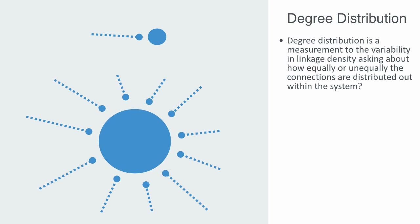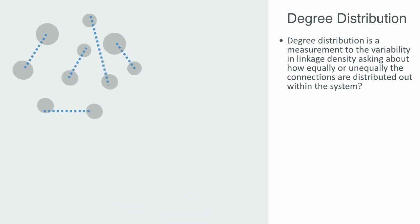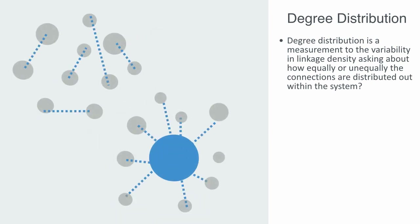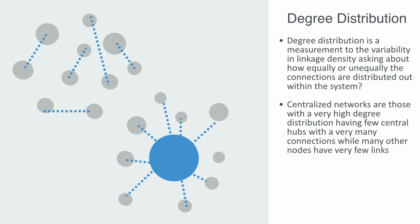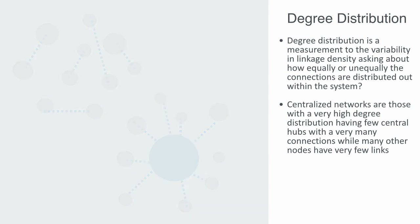Degree distribution goes a long way to tell us how centralized or distributed the network is. Centralized networks are those with a very high degree distribution, having few central hubs. Networks with many nodes may have very few links, which may also give us what is called a scale-free network — which are surprisingly common in our world.